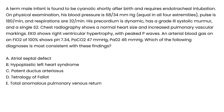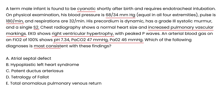Clinical vignette 2: A term male infant is found to be cyanotic shortly after birth and requires endotracheal intubation. Blood pressure is 68/34, pulse is 180, respirations are 32. His precordium is dynamic. He has a grade 3 systolic murmur and a single S2. Chest x-ray shows normal heart size with increased pulmonary vascular markings. EKG shows right ventricular hypertrophy with peaked P waves. ABG on FiO2 of 100% shows pH 7.34, PaCO2 47, and PaO2 46. The clues — EKG finding, chest x-ray finding, and cyanosis — point to TAPVR as the correct diagnosis.